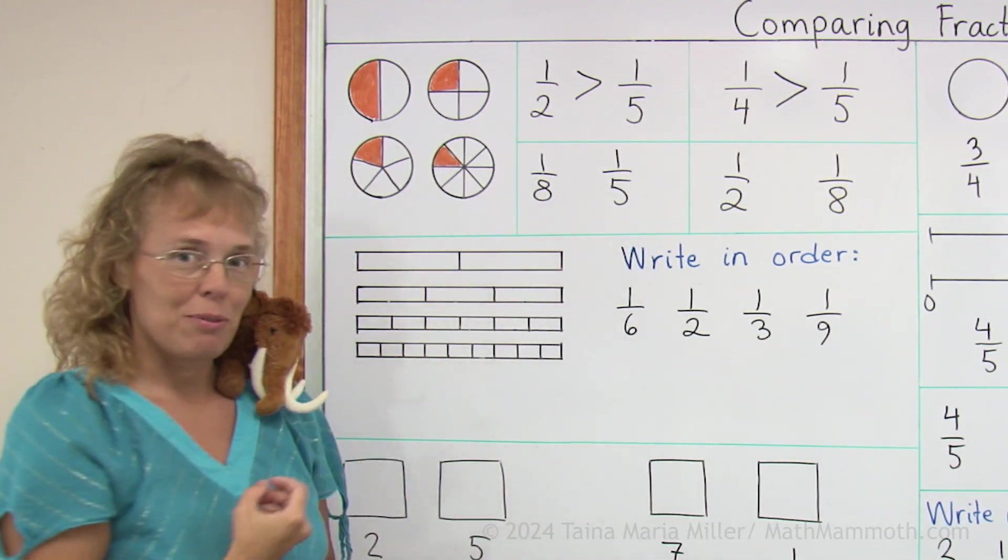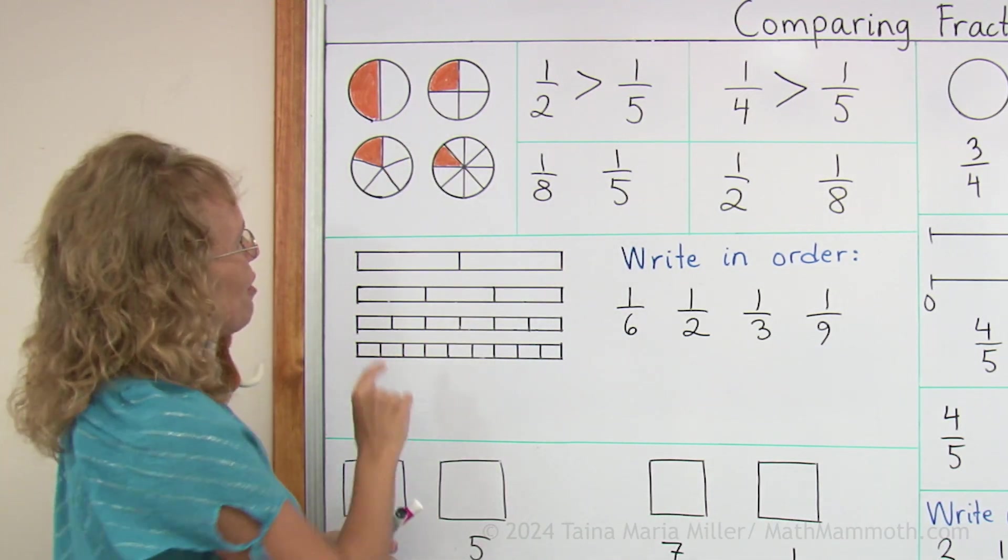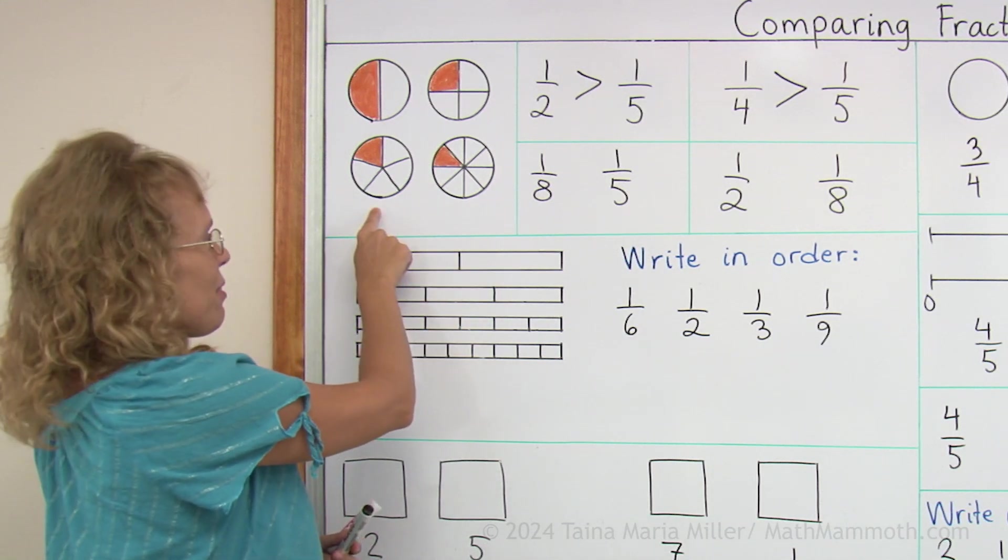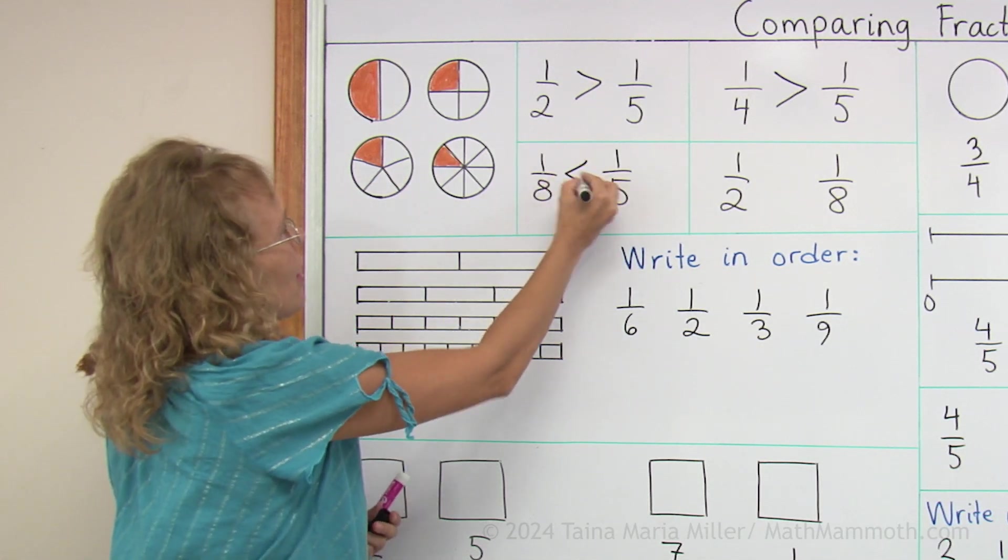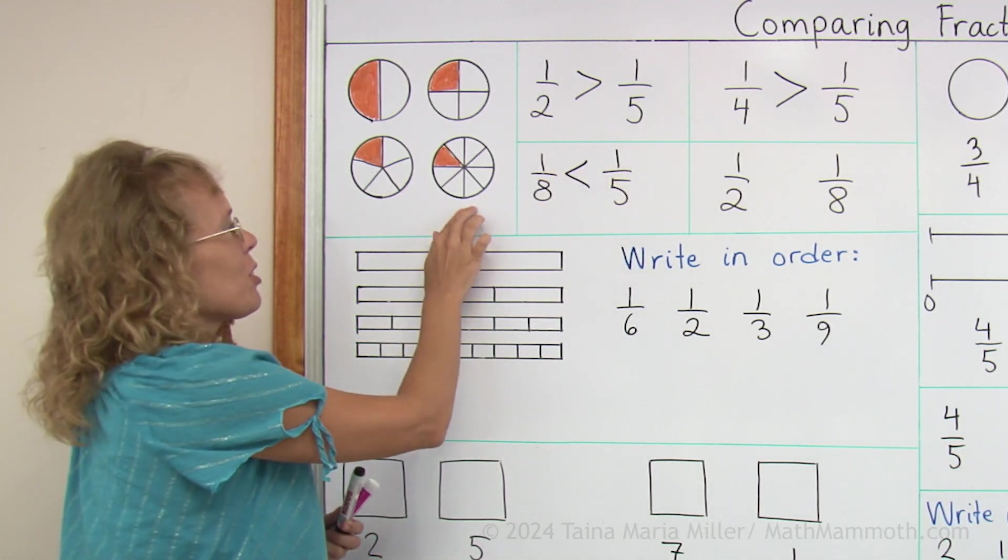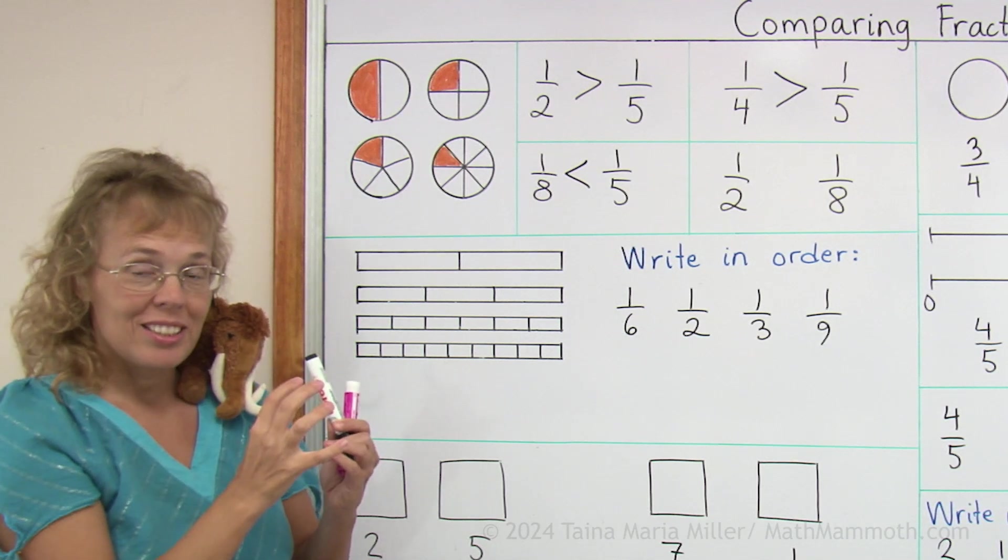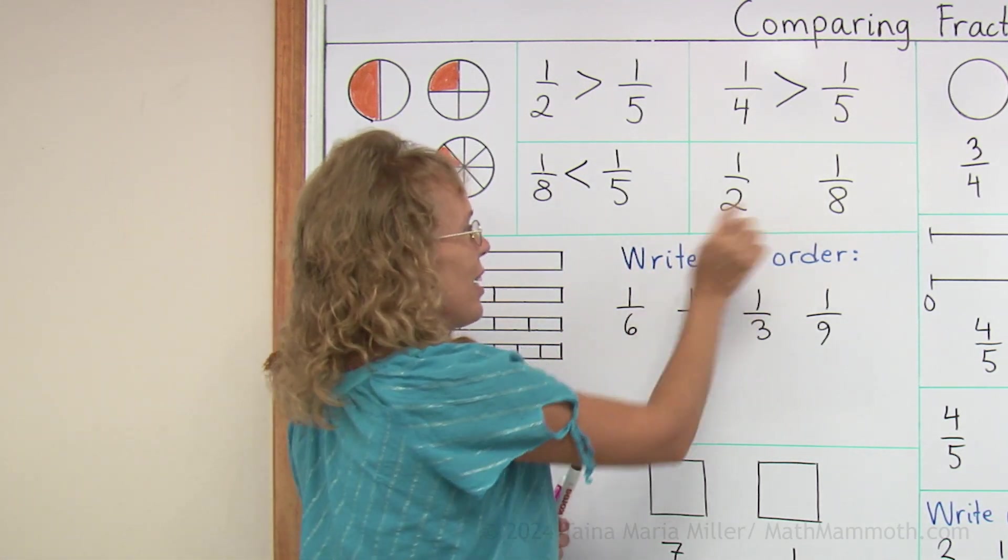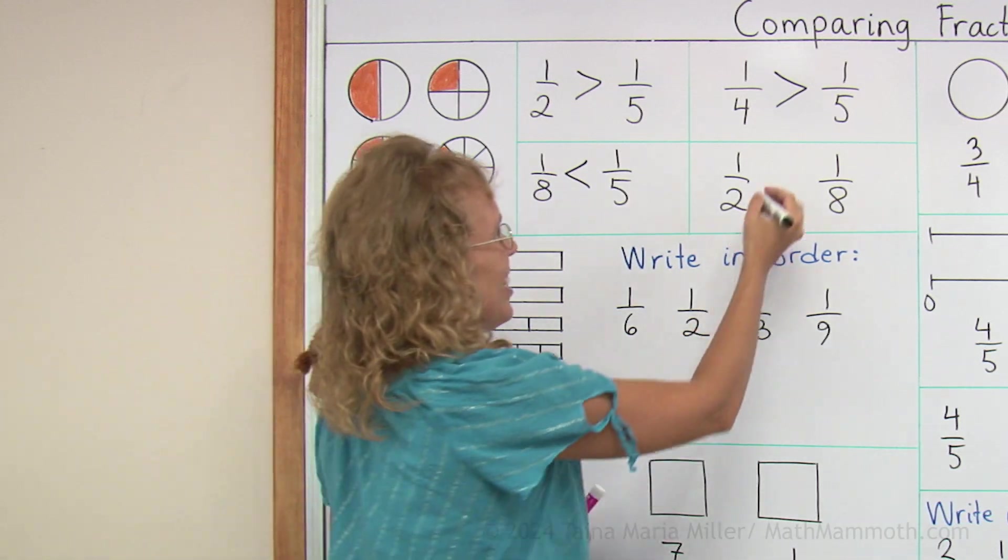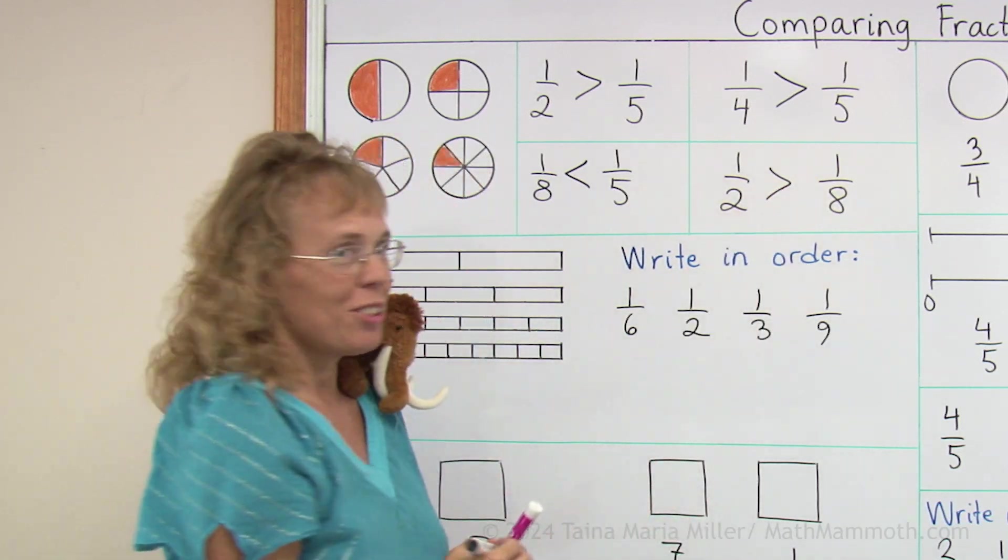How about one eighth and one fifth? You have the pictures here too. One eighth is the smaller piece, and that is because you have divided the pie into more pieces, so each piece is smaller. One half and one eighth, that's easy. One half is definitely more pie to eat than one eighth.